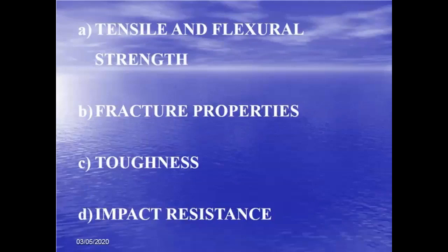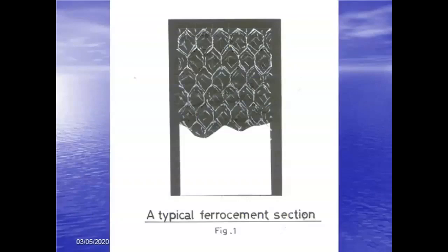The foremost improved property is the tensile and flexural strength of ferrocement, followed by fracture resistance properties, toughness — ferrocement has very high toughness — and high impact resistance. This is a typical ferrocement section where the reinforcement in the form of wire meshes is seen within the body of cement mortar composite. When you reinforce the cement mortar, you get the ferrocement composite.